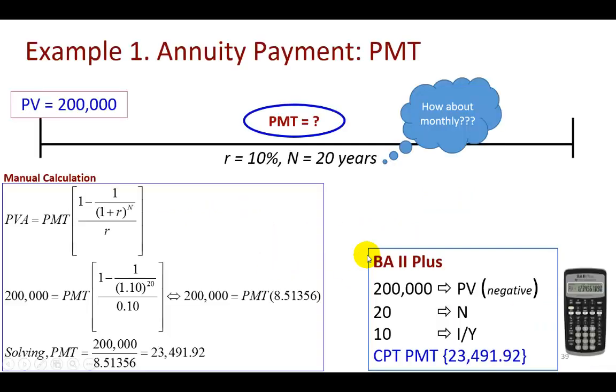In this first example, we have a present value of $200,000 and we wish to calculate the annuity payments over a period of 20 years at 10%. We can look at this $200,000 as the present value of a 20-year annuity. Defining the present value of an annuity, making the substitutions, and solving for payment, we find it to be $23,491.92 going the algebraic way.